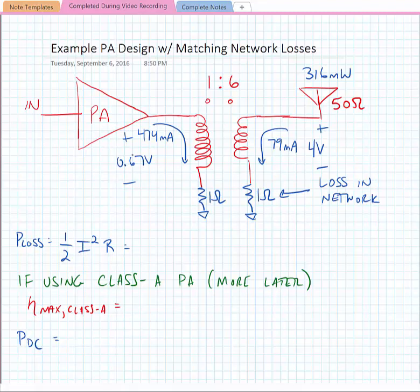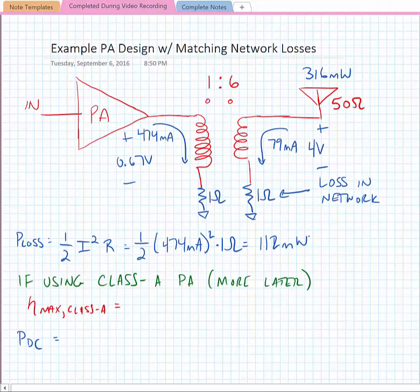So we can estimate the loss in the transformer is one-half I squared R, and it equals about 112 milliwatts.